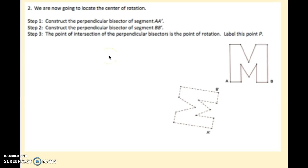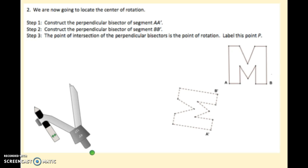I'm going to start by constructing some segments from pre-image to image. My pre-image here is this M that's up at the top that has A and B on it, and that was rotated counterclockwise to my image, which has A prime and B prime on it. First thing I'm going to do is connect my corresponding points. I'm just going to start with A and A prime, so I'm going to draw a segment that connects A to A prime here.